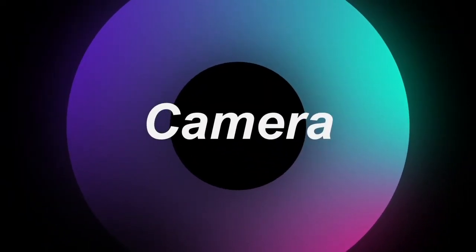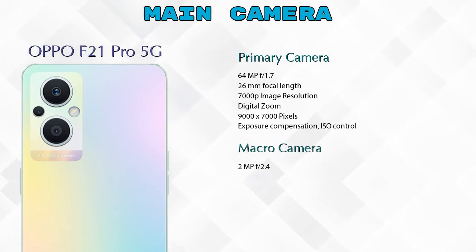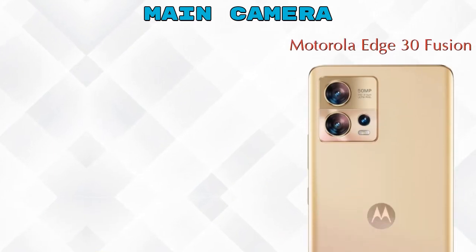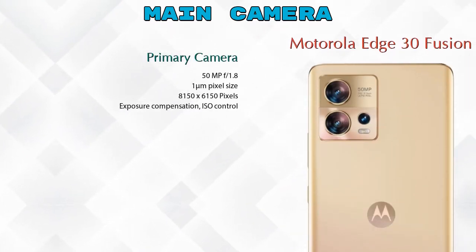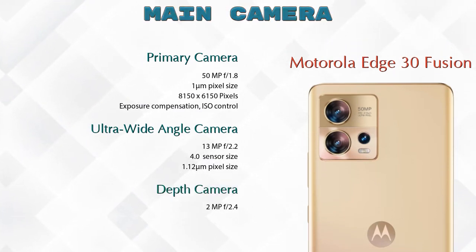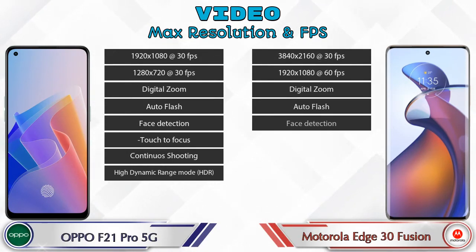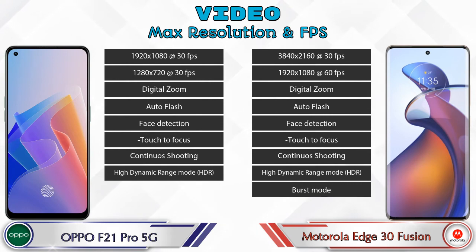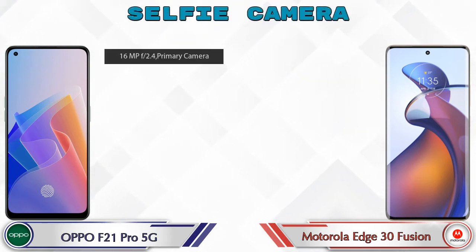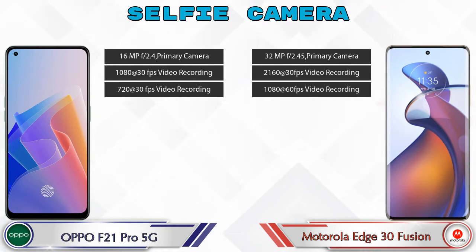Now let's talk about our favorite feature: the camera. For the rear camera, the F21 Pro 5G has three cameras — a primary camera, a macro camera, and a mono camera. The 30 Fusion 5G also has three cameras — a primary camera, an ultra-wide angle camera, and a depth camera. For video camera features, the F21 Pro 5G has eight and the 30 Fusion 5G has nine different types. For the front selfie camera, both phones have a single camera with three different features available.